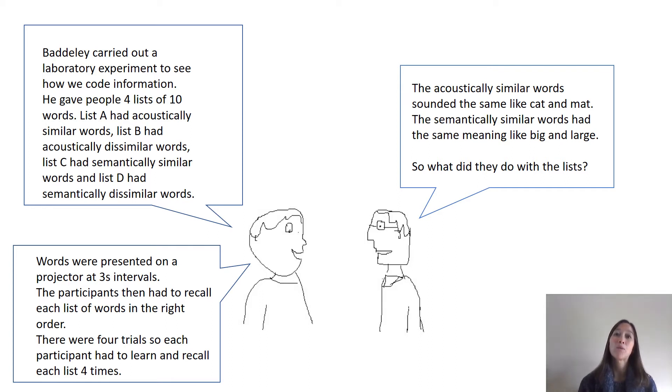The acoustically similar words sounded the same, like cat and mat, and the dissimilar words sounded different. The semantically similar words had the same meaning, like big and large, and the semantically dissimilar words had different meanings. So what did they actually do with the lists?